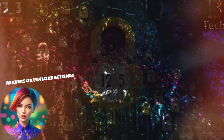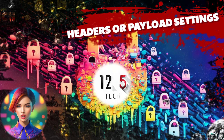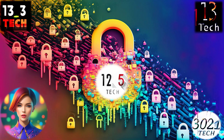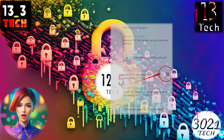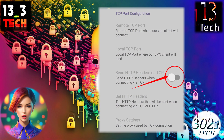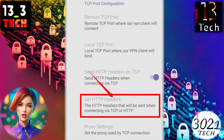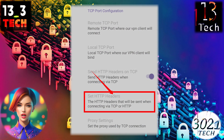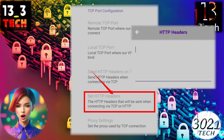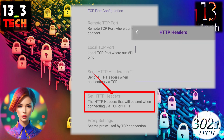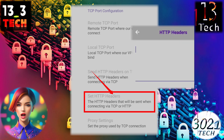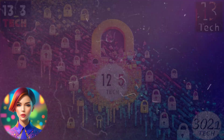Step 8: Configuring HTTP Headers or Payload. Enable the HTTP headers or payload settings by selecting the corresponding radio button. Click on Set HTTP Headers, and a pop-up box will appear. Here, input valid headers and click OK to save.